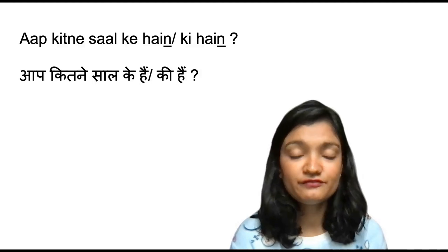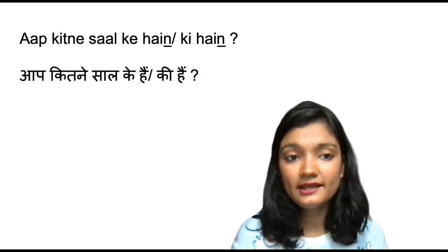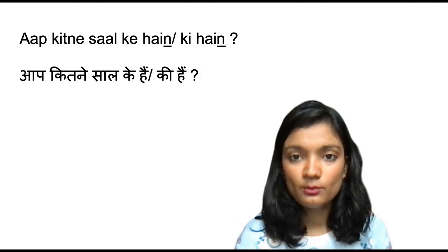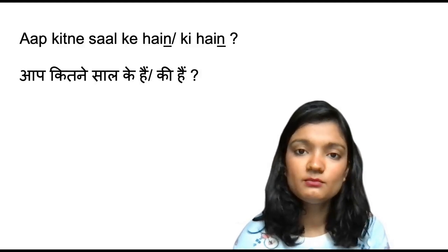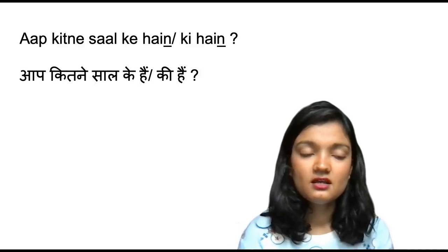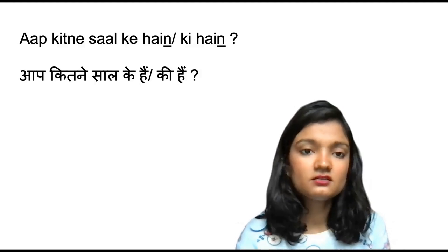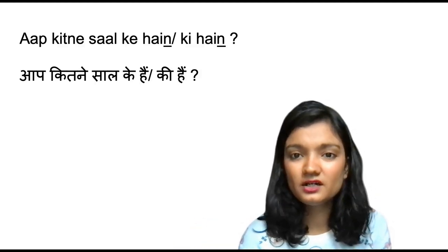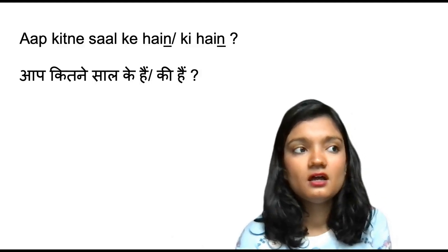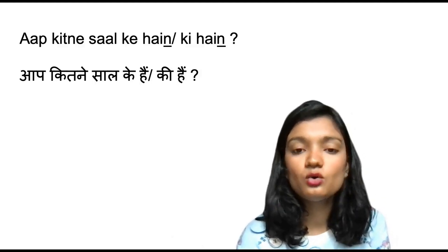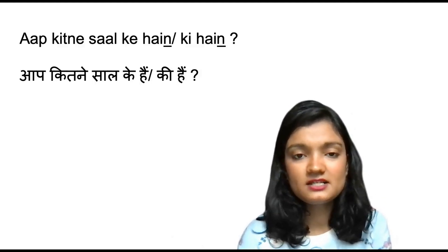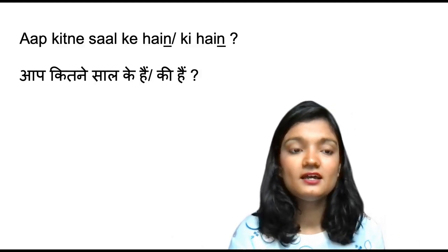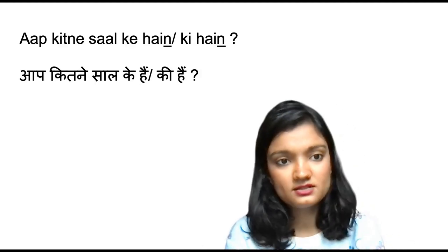The next question is 'aap kitne saal ke hain,' which is asked to a male, and 'aap kitne saal ki hain,' asked to a female, when you want to know their age. 'Kitne' means 'how many' or 'how much,' and 'saal' means 'years.' This directly translates to 'How old are you?' or 'How many years do you have?' Remember, 'kitne saal' remains constant.